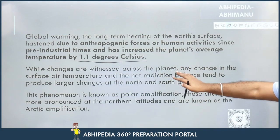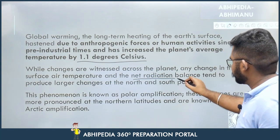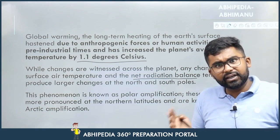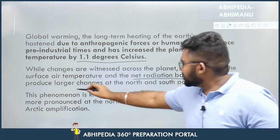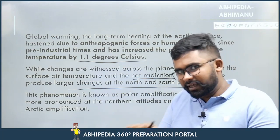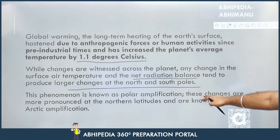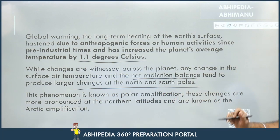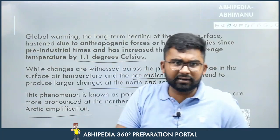While changes are witnessed across the planet, any change in surface air temperature and the net radiation balance — involving albedo and insolation — tends to produce larger changes at the poles, both north and south. This phenomenon is known as polar amplification. These changes are more pronounced at the northern latitudes and are specifically known as Arctic Amplification.